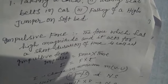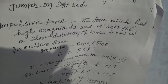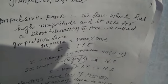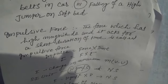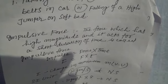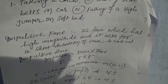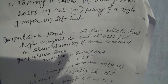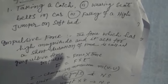The SI unit of impulse is Newton-second. We know the SI unit of force is kg·m/s², multiplied by seconds, so the seconds cancel to give kg·m/s, which equals Newton-second. So the SI unit of impulse is Newton-second. Impulse has high magnitude but acts for a very short time interval, causing a change in momentum.